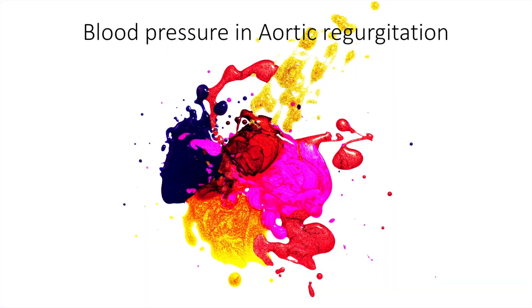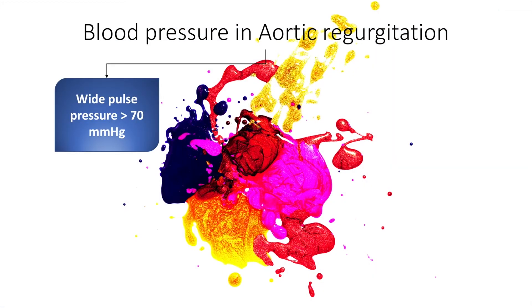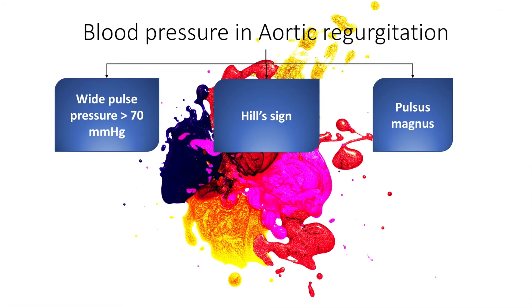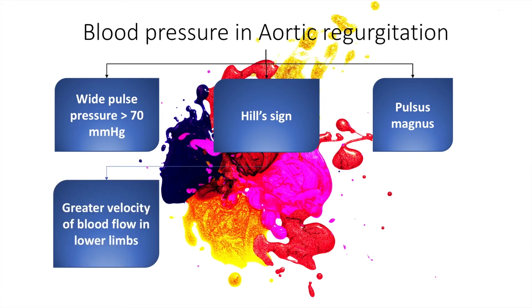What is more important in aortic regurgitation is the pulse pressure, and it is characterized by a wide pulse pressure of more than 70 millimeters of mercury. Hill sign, as we will see in a moment, is positive, and pulsus magnus, as we have already seen.